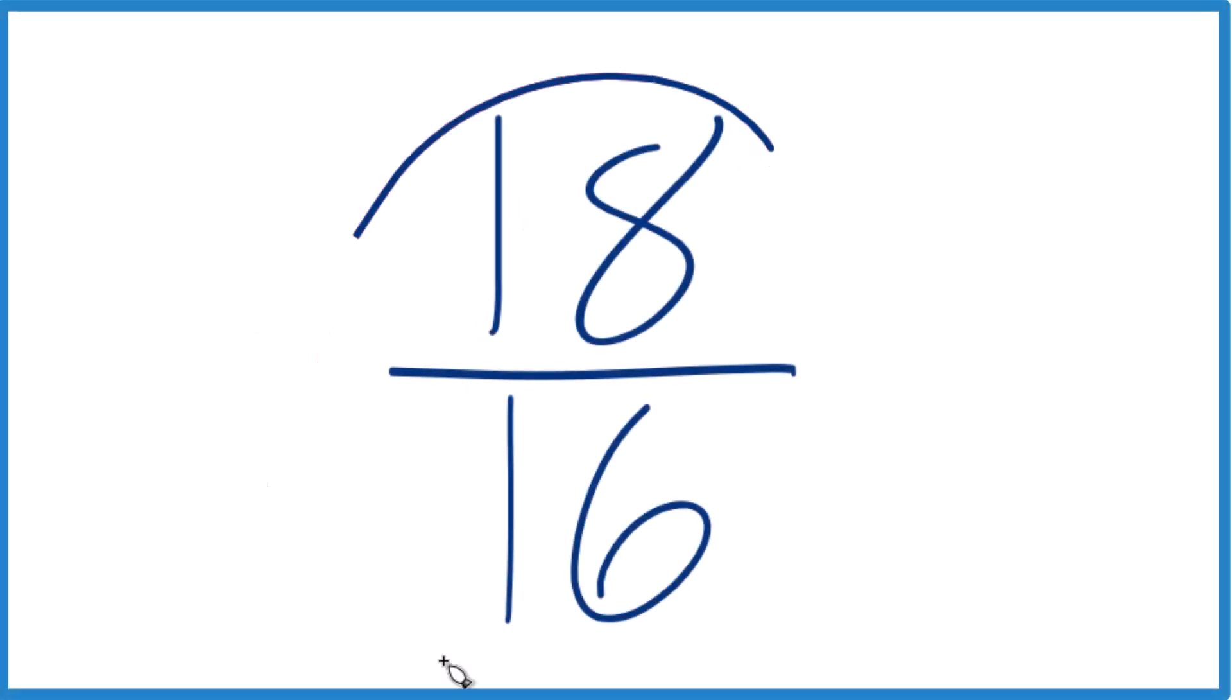Let's simplify the fraction 18 sixteenths, and then we'll also write 18 sixteenths as a mixed number. So we're looking for a factor, something that goes into 18 and 16 evenly. It looks like 2 is the only number I see that will go into both 18 and 16.